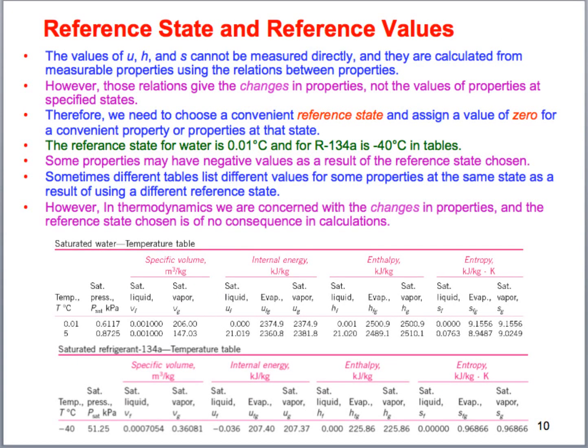Let's finish chapter 4. What I'd like to talk about right now is reference states and reference values. All these properties that we're dealing with are taken at a reference state. The reference state has to be given a value of 0 somewhere, because we can calculate what these values are, but knowing where they equal 0 in certain locations is important.